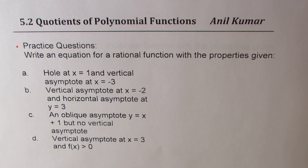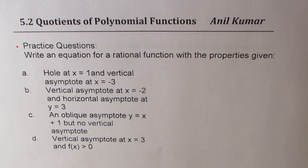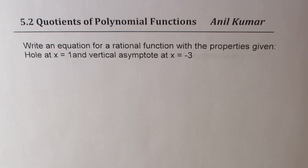And Part D: vertical asymptote at x equals 3 and f(x) is greater than 0. You can always pause the video, answer these questions, and then look into my suggestions. Now, here are the solutions of these questions.